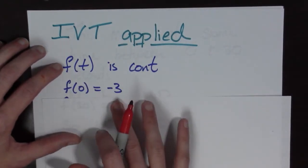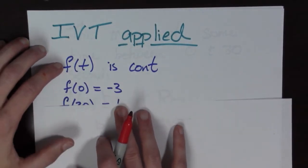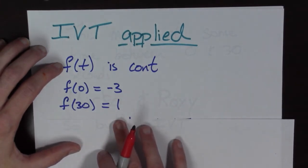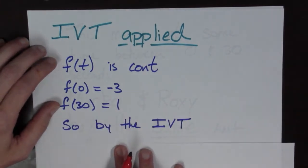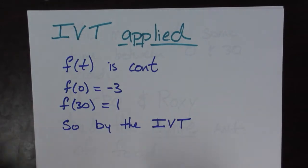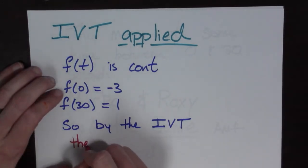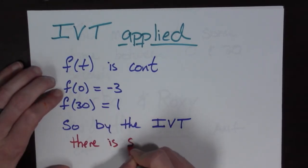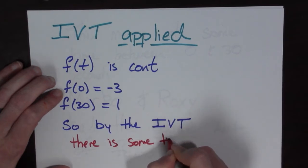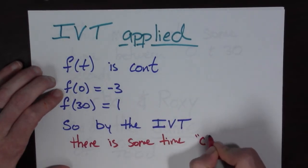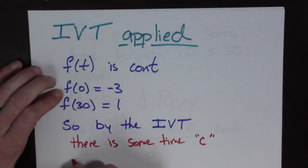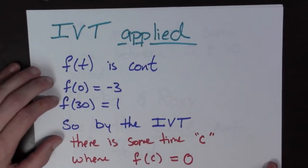And we know that f(0) = -3 and we know that f(30) = 1. So by the Intermediate Value Theorem, there is some time - I'm going to call it c - some time c where f(c) is equal to zero.